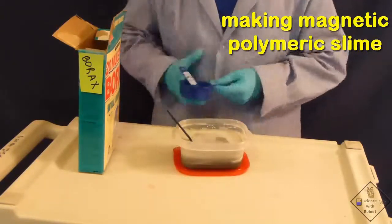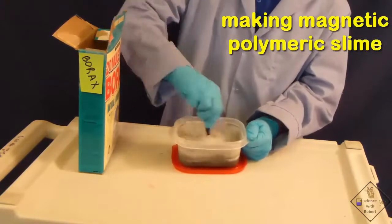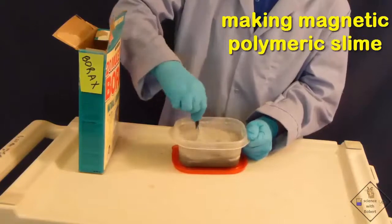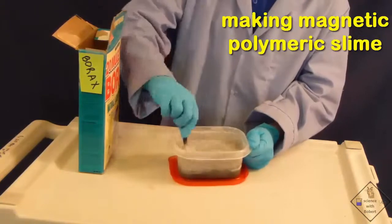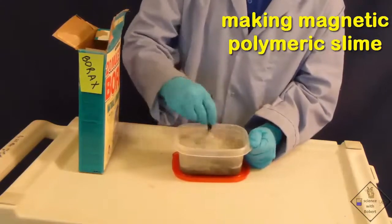The borax is the cross-linking agent. It makes the solution basic and causes the long polyvinyl acetate molecules to cross-link. You can see that the thickening and gelling of the glue is becoming quite apparent rather quickly.